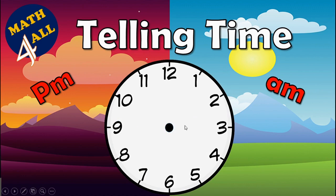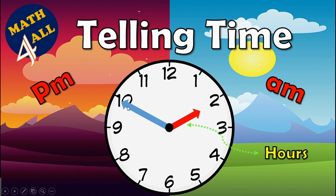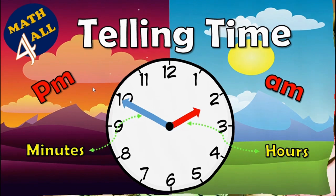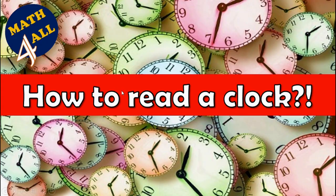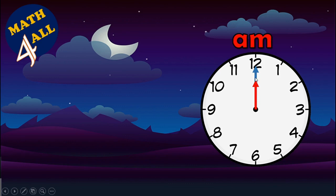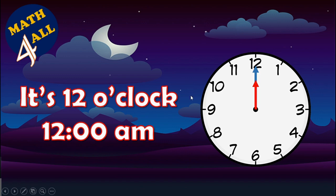Let's look at the components of the clock. A clock has two main hands: a short one and a long one. The short hand is for hours and the long hand is for minutes. Now, when both hands are on 12, we call it 12 o'clock.